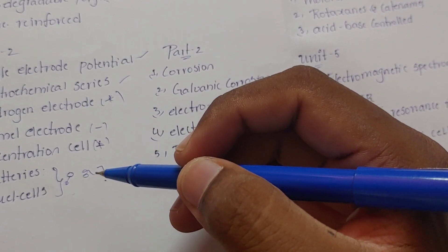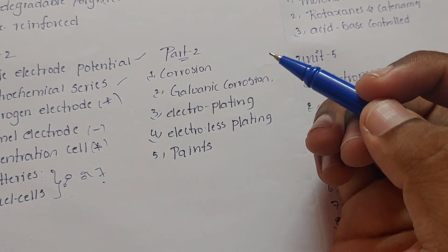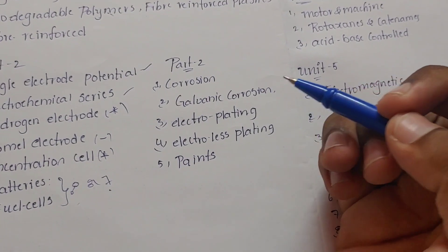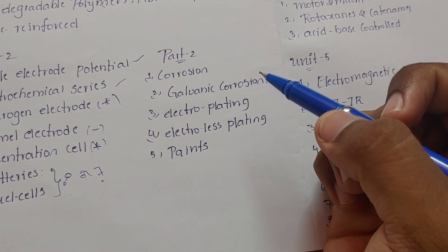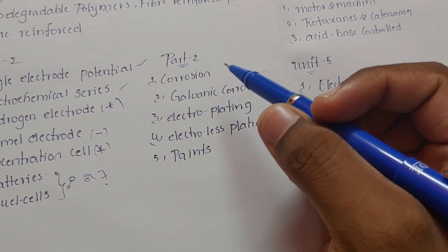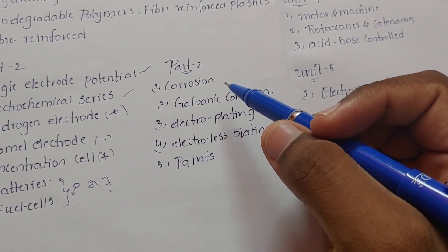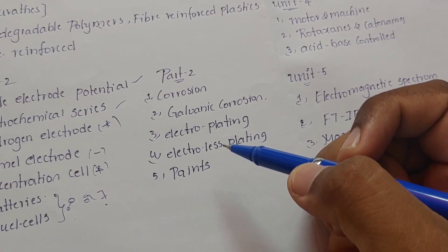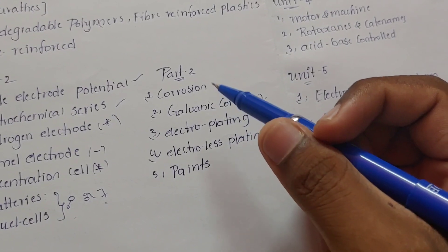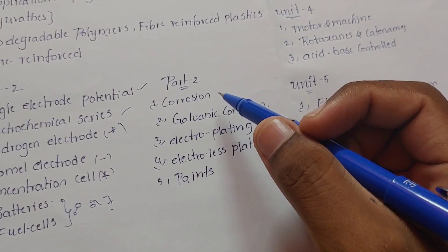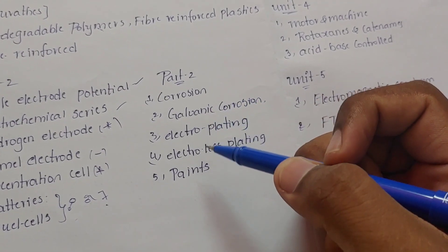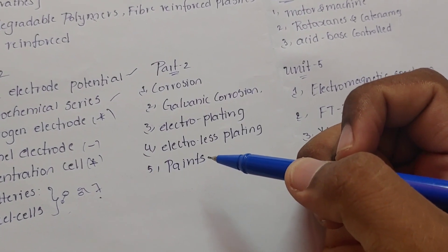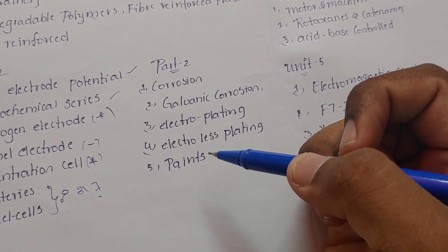The third part is corrosion and galvanic corrosion. The main topic of corrosion includes the definition of corrosion and electroplating. Corrosion — start with the definition, then move on.